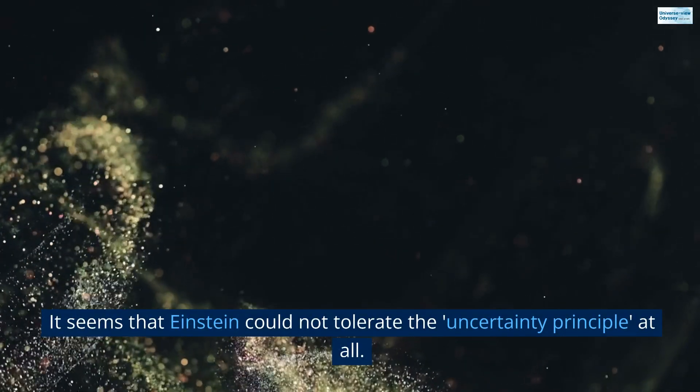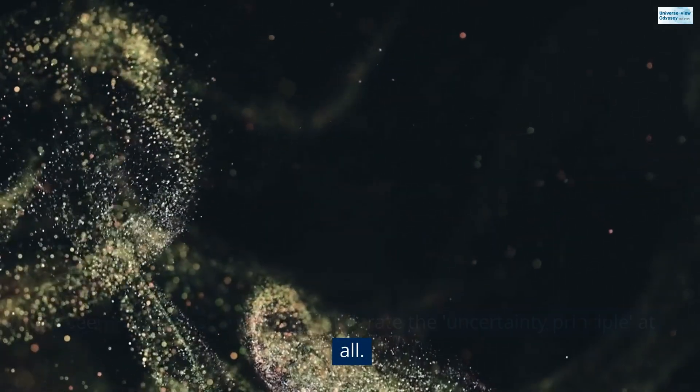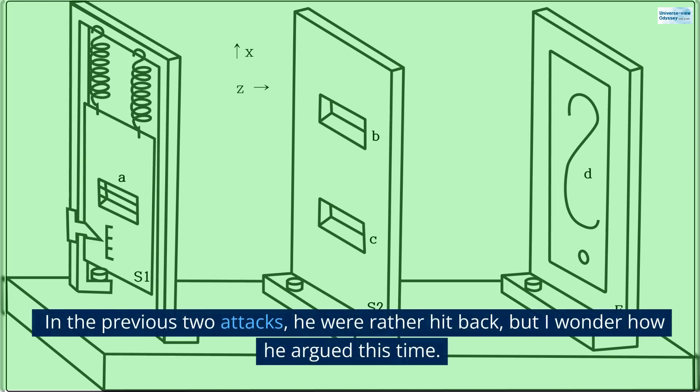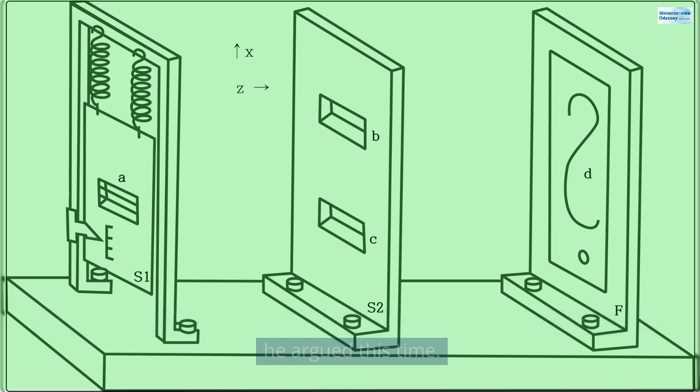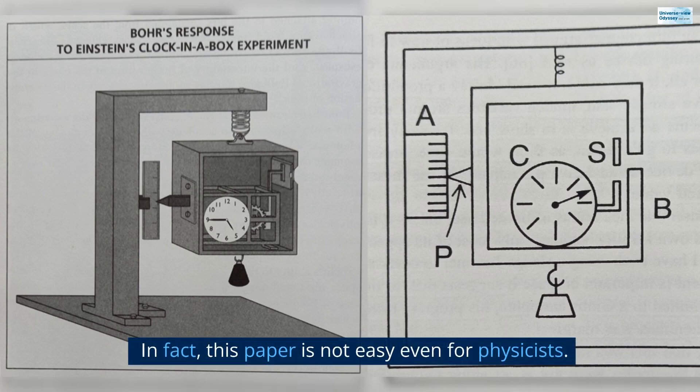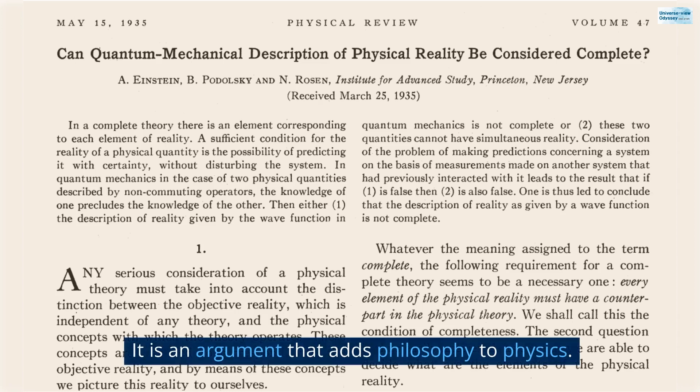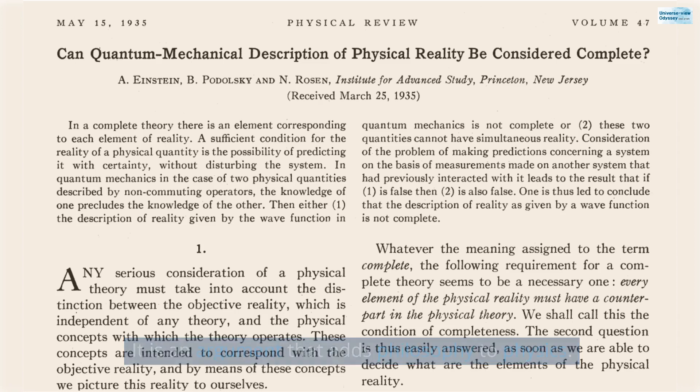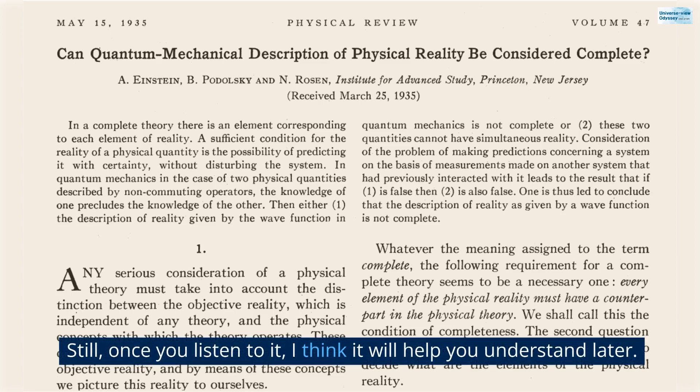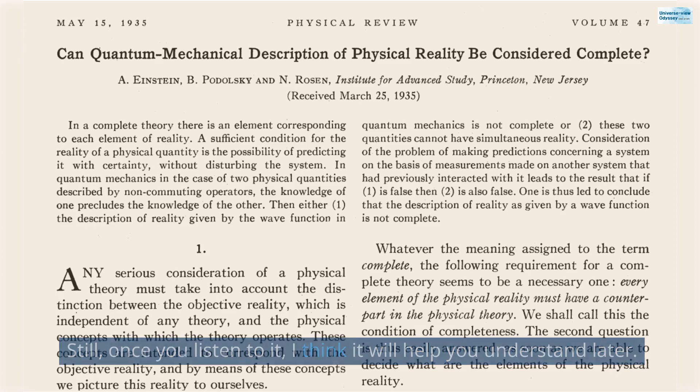It seems that Einstein could not tolerate the uncertainty principle at all. In the previous two attacks, he were rather hit back, but I wonder how he argued this time. In fact, this paper is not easy even for physicists. It is an argument that adds philosophy to physics. Still, once you listen to it, I think it will help you understand later.